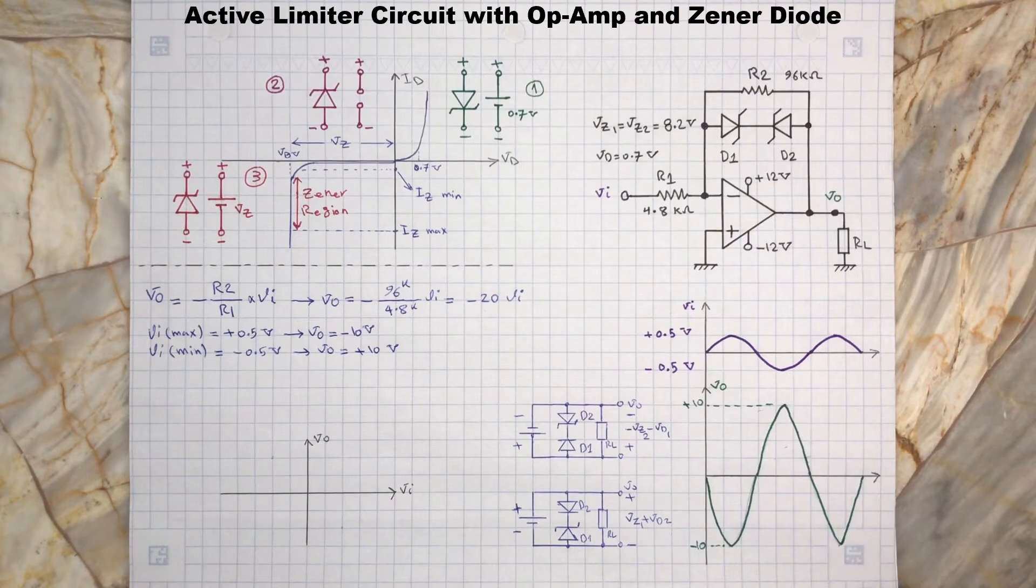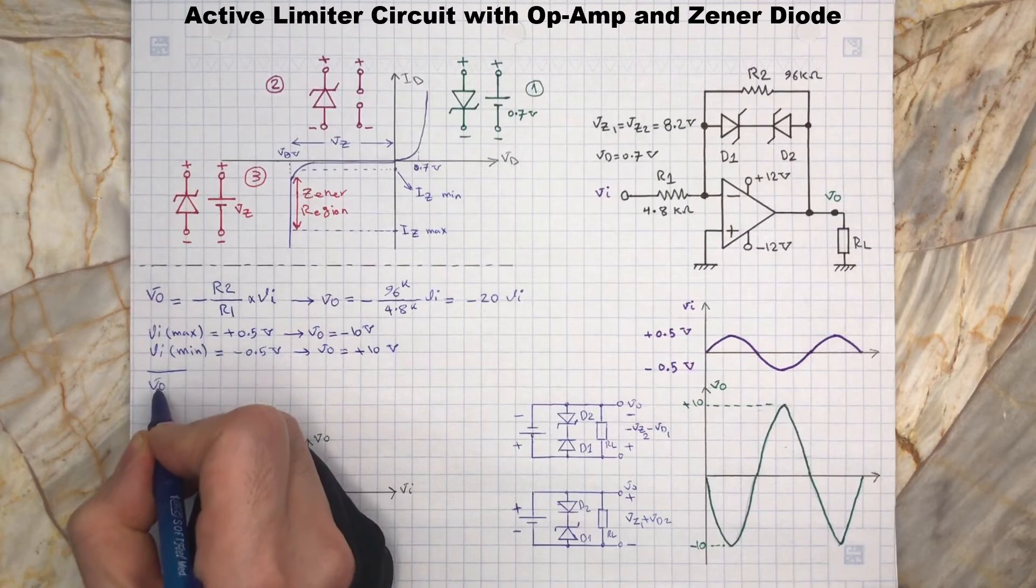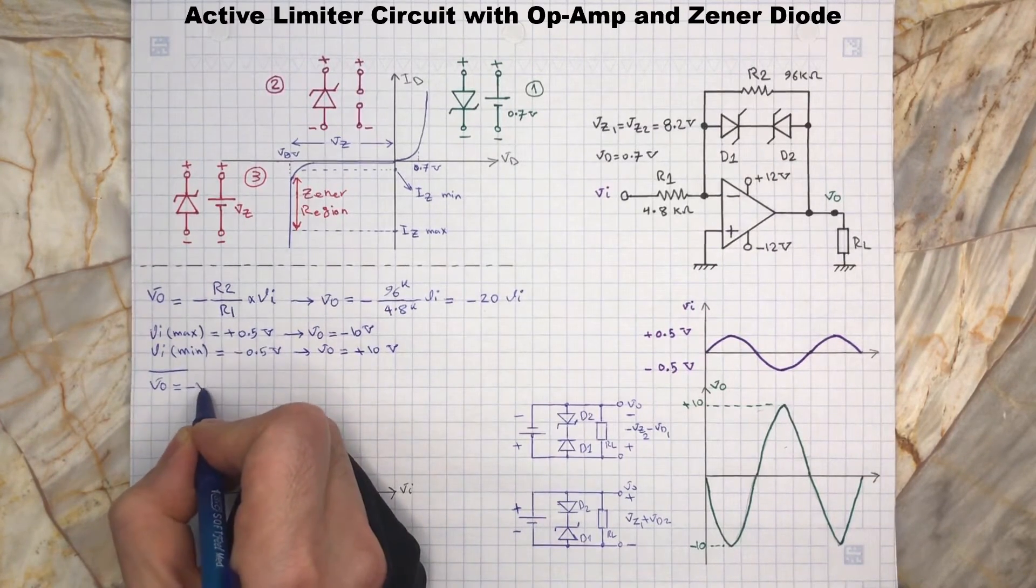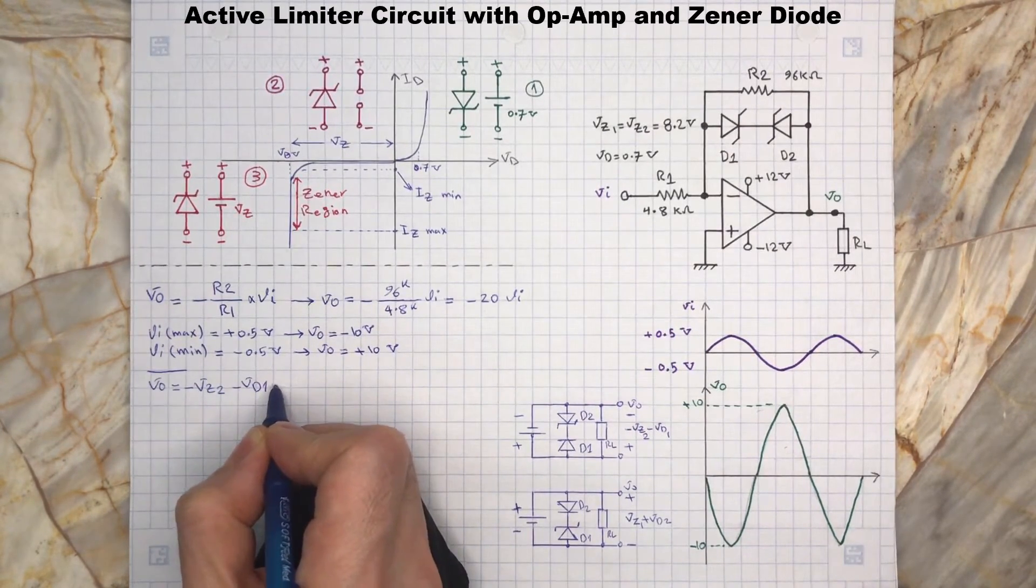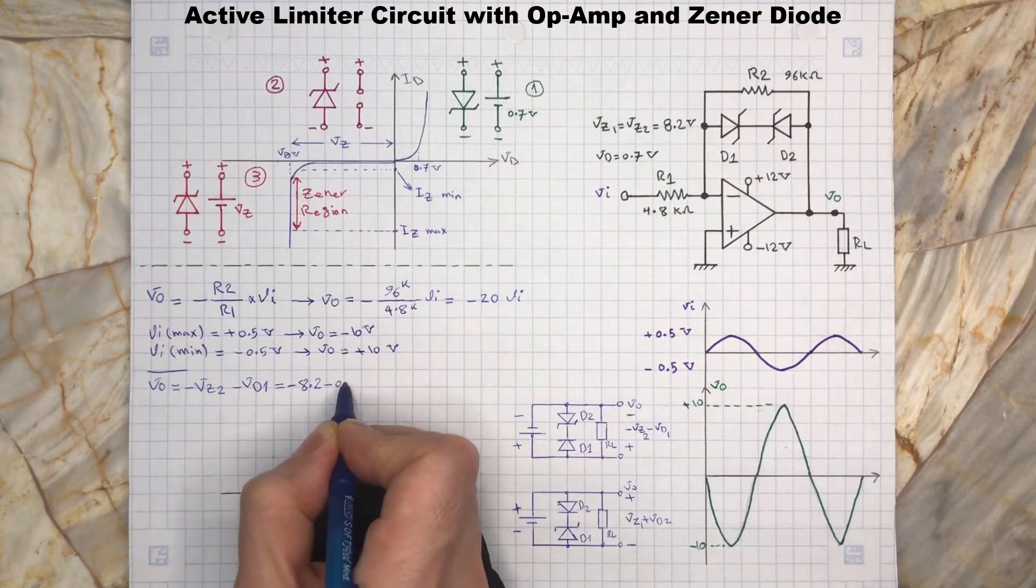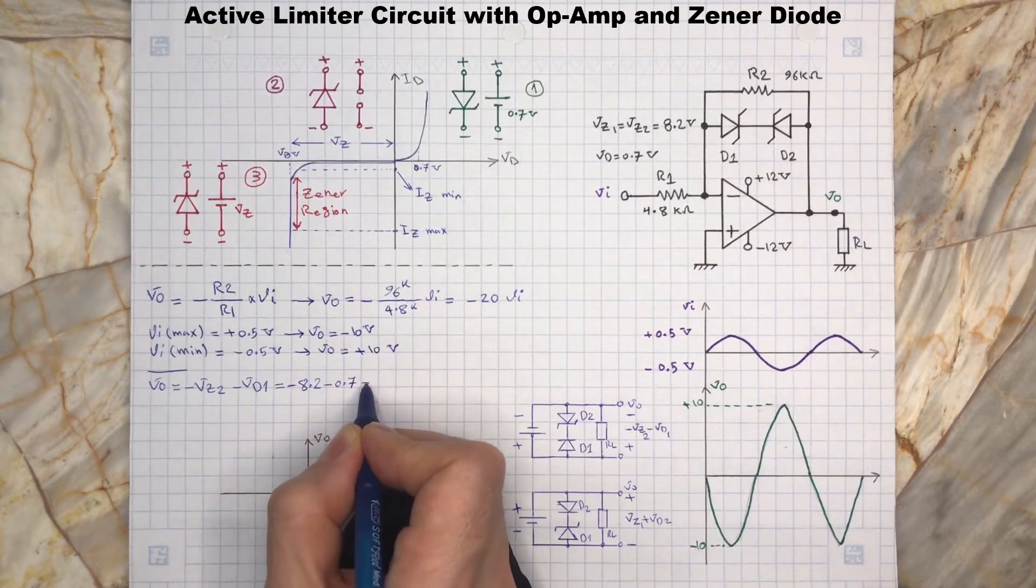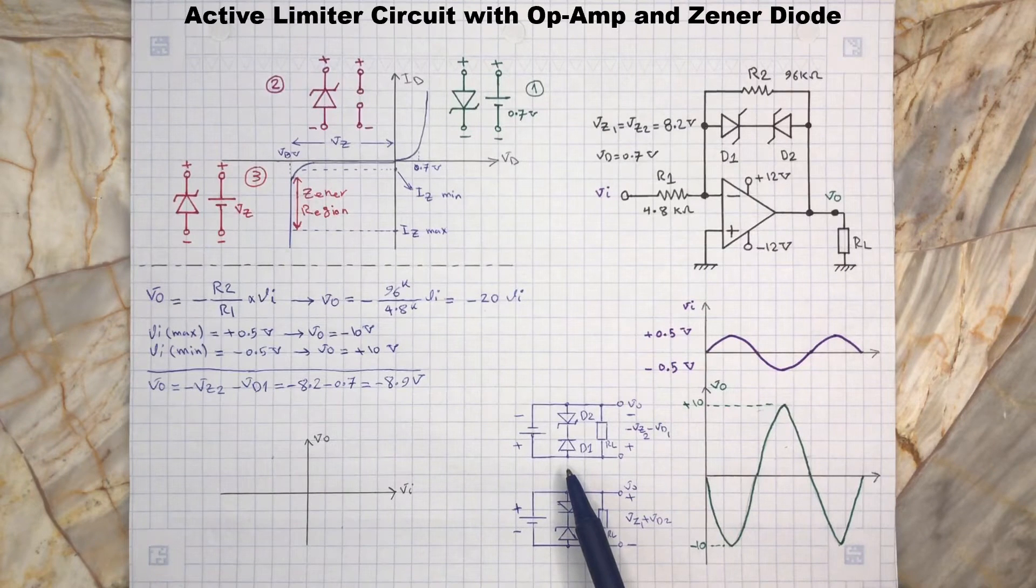Now let's find the conditions when diode D2 enters to the breakdown region. When Vo is equal to D2 breakdown voltage plus diode D1 forward bias voltage, then both diodes will turn on. Let's write the expression here. Here is the simple wire circuit for this condition.